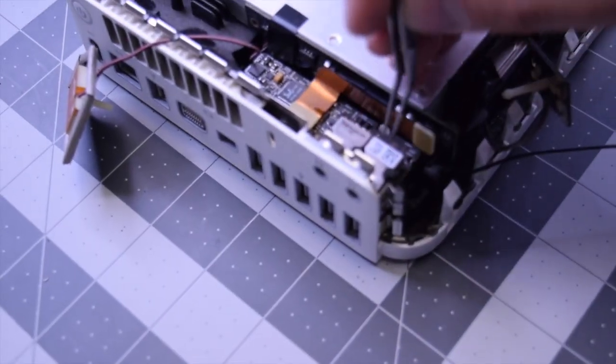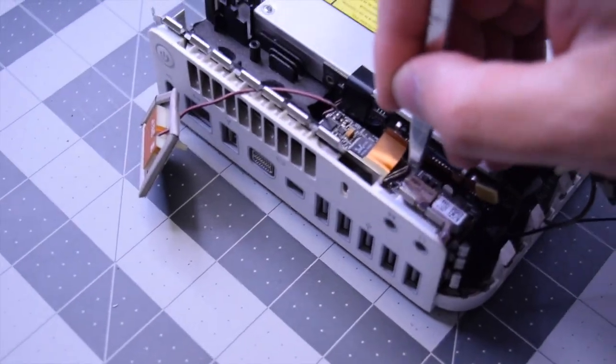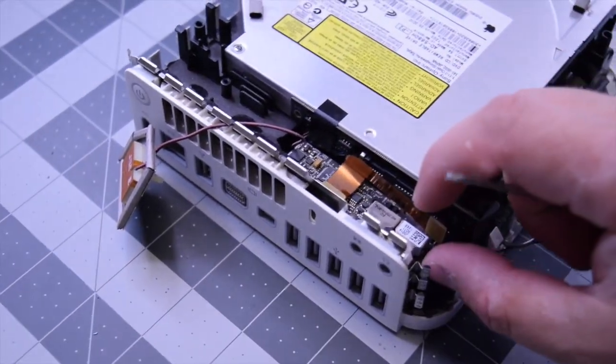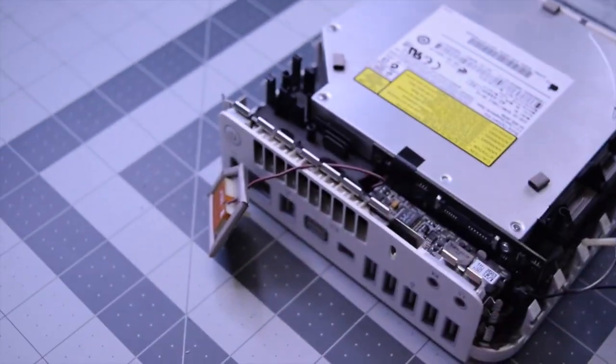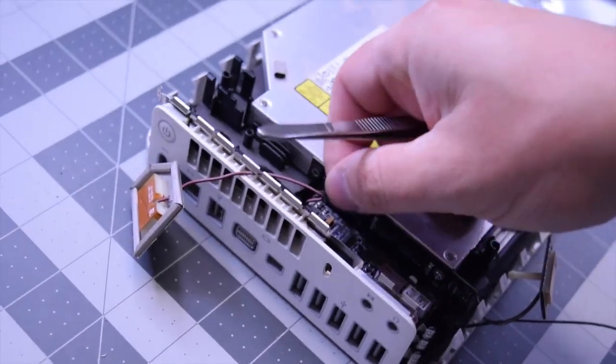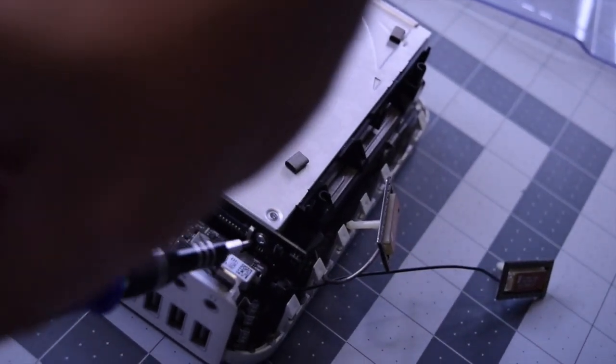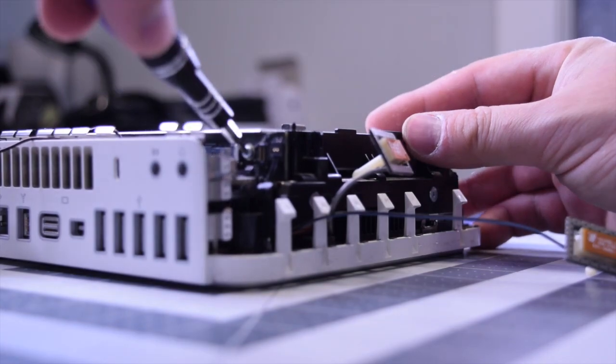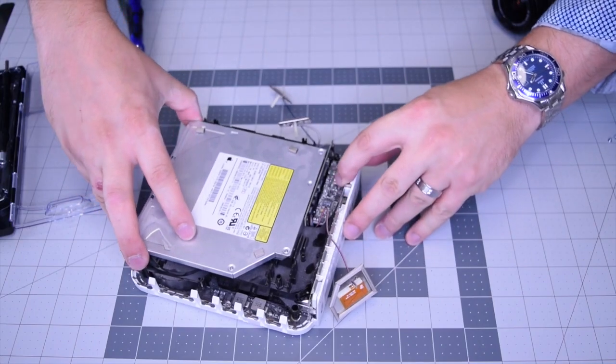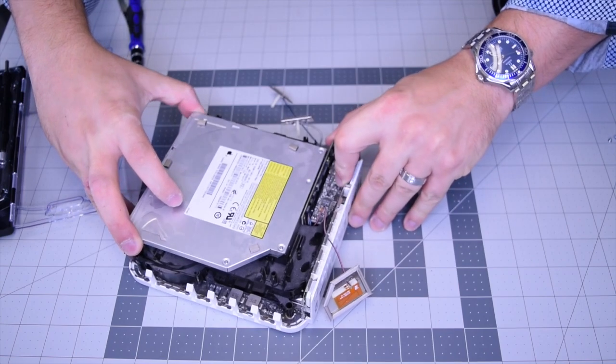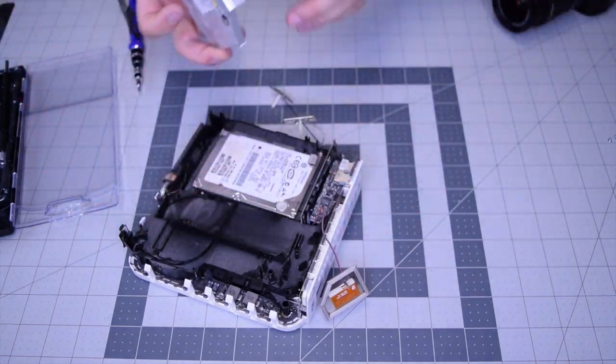Now we need to go ahead and peel back and disconnect that bridge ribbon cable right there. Gently disconnect that. Peel back that little piece of tape. And now the fifth and final screw right behind there. That will release the DVD drive and that should be able to come out, slide out just like that.